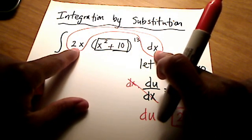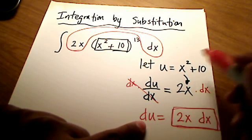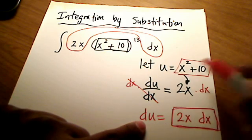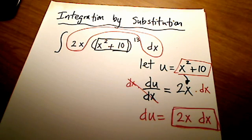Well, we're going to substitute that as well with du, right? So everywhere I see a u, I'm going to put in x squared plus 10. And everywhere I see du, I'm going to put in 2x dx.